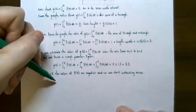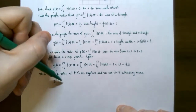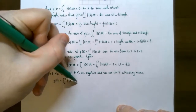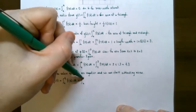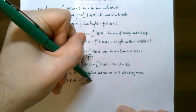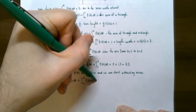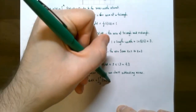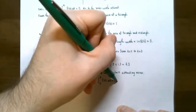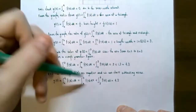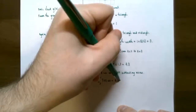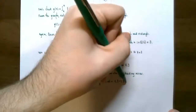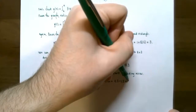g of four is the definite integral from zero to four of f of t dt. It equals the integral from zero to three (which was 4.3) plus the integral from three to four — but from three to four we subtract 1.3, the equivalent negative area. So the value of g of four is back to three.